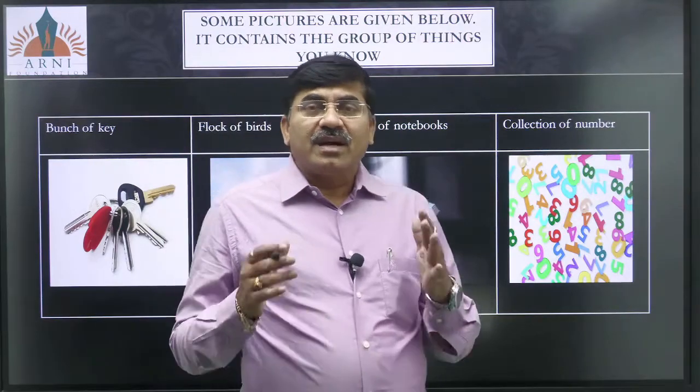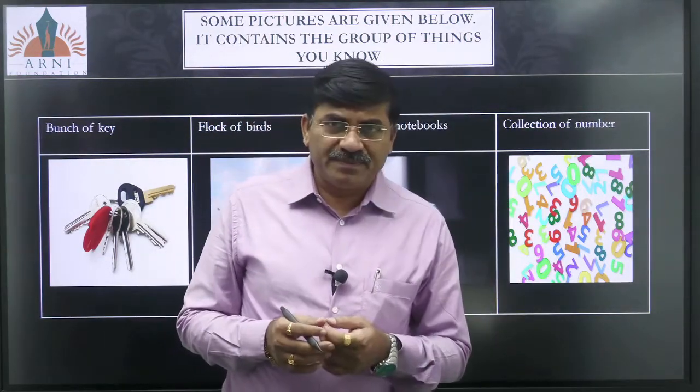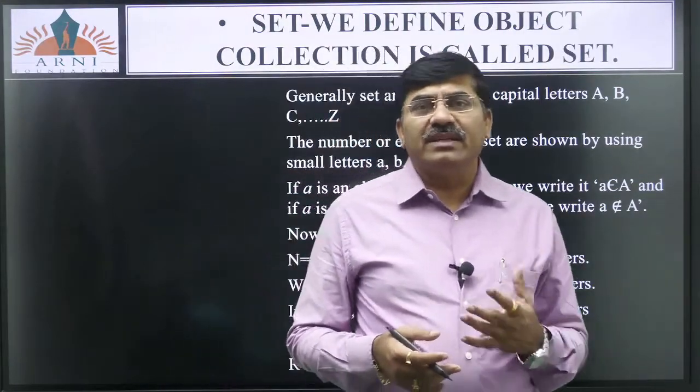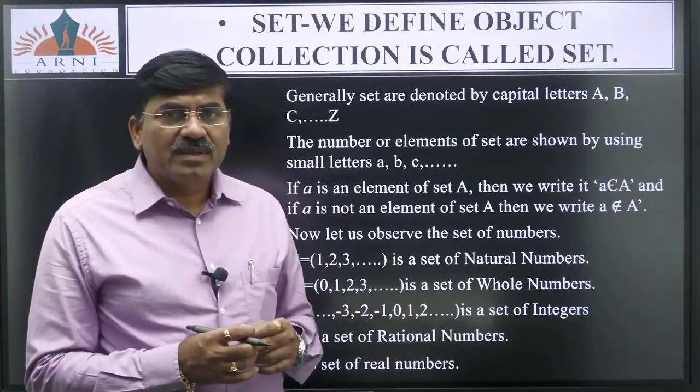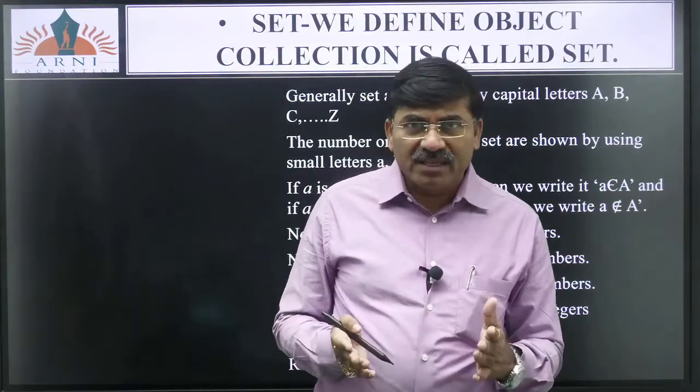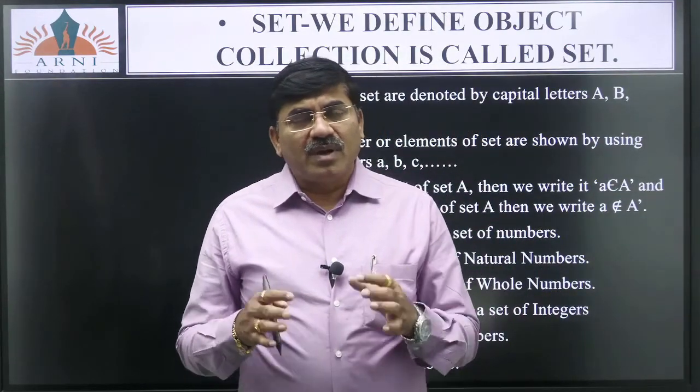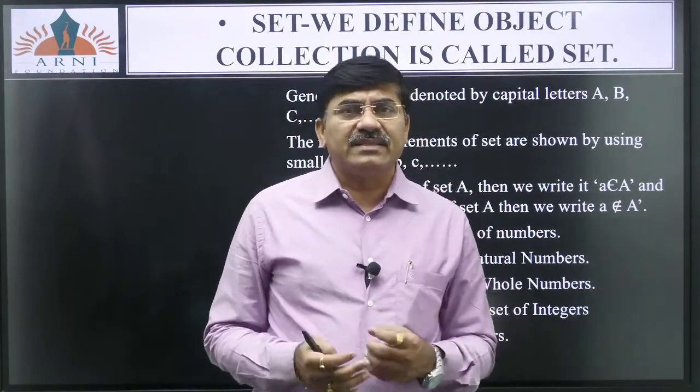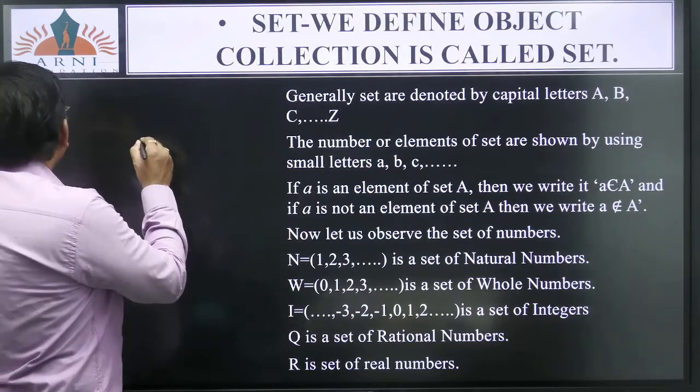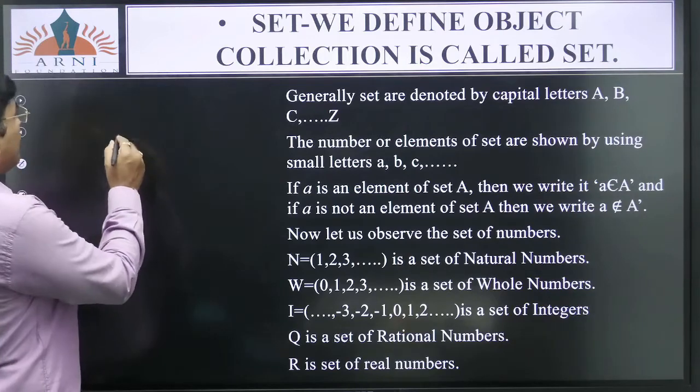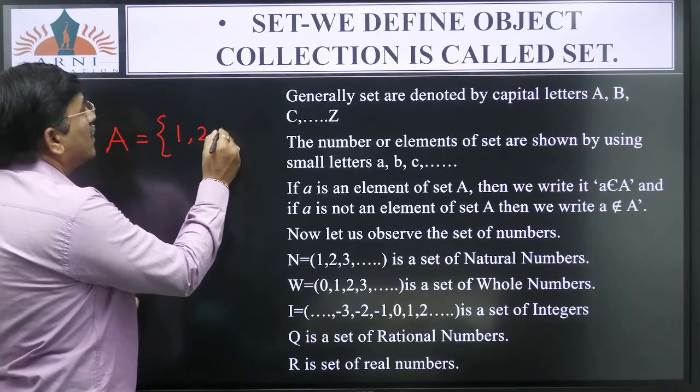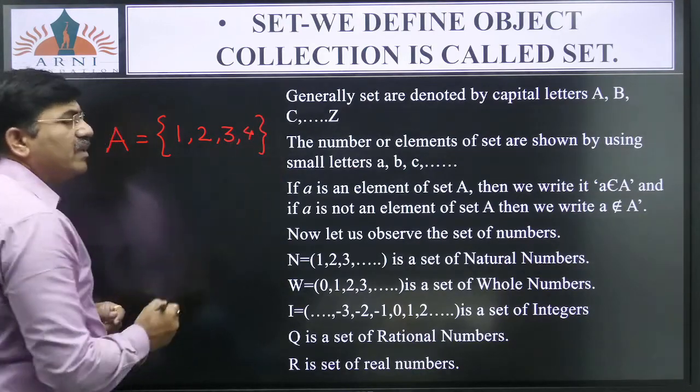In mathematics, well defined objects is called as sets and in this sets, different kind of sets we are going to study. So generally the sets are denoted by capital letters. So capital letter A is used to represent the set and I will write some numbers like 1, 2, 3, 4. So these 4 numbers are part of the sets.